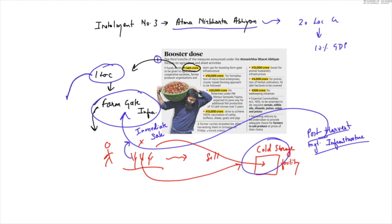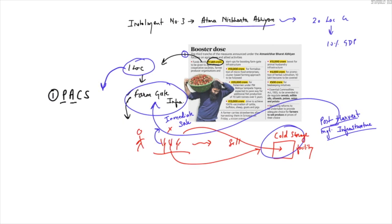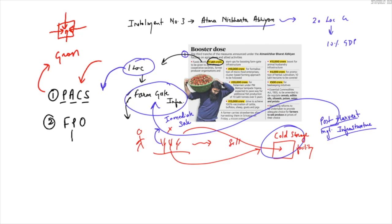This fund will be provided to the primary agricultural cooperative societies — rural institutions which work at the level of Gram Panchayat, where farmers mobilize funding for their common needs and welfare. Secondly, money will be provided to farmer producer organizations, which are groupings of farmers who come collectively and work for their collective welfare. Thirdly, money will be provided to various agricultural entrepreneurs along with various startups.